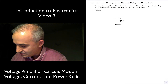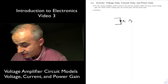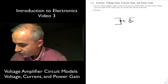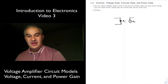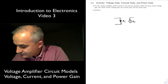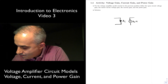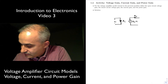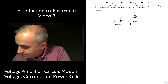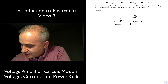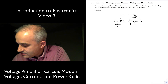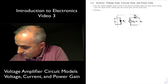So let's draw our voltage amplifier. Input impedance RI. We are using a voltage control voltage source to model the amplification factor. AV is the open circuit voltage gain. And this amplifier has an output impedance Rout. This is our voltage in, this is our voltage out. This is our amplifier circuit model.